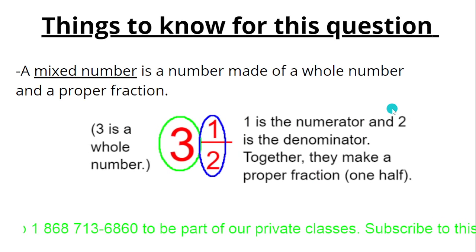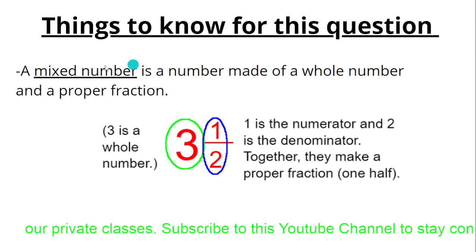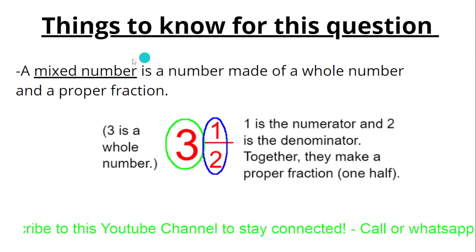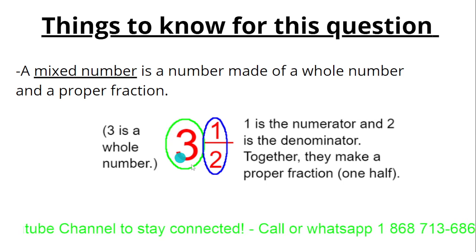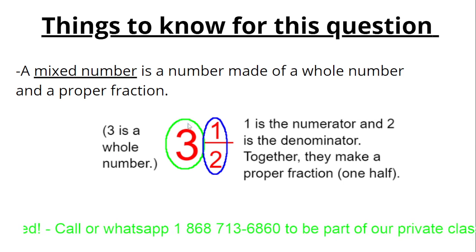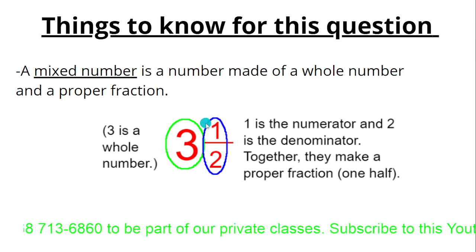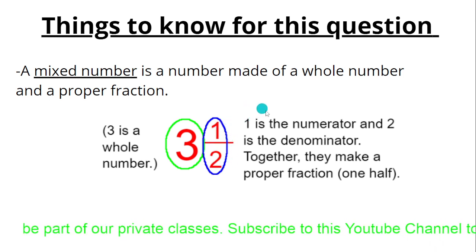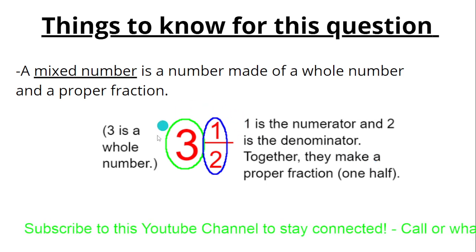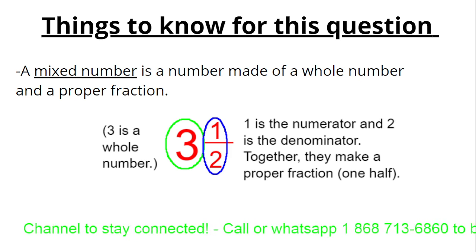For this question you also need to know what a mixed number is. A mixed number is a number made of a whole number and a proper fraction. For example, three and a half — three is the whole number, the big number, and one half is the proper fraction, where one is the numerator and two is the denominator. Together they make the mixed number.